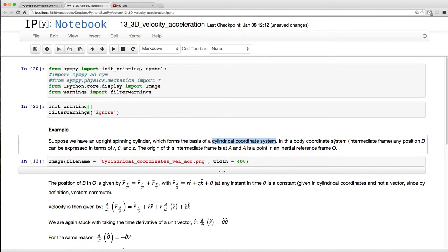In this body coordinate system, which is an intermediate frame, any position B can now be expressed in terms of R, theta, and Z. Remember that. The origin of this intermediate frame is at A, and A is a point in an inertial reference frame O.